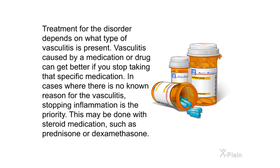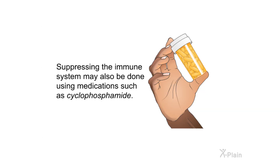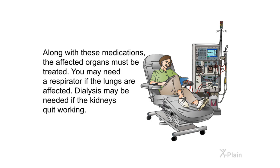Treatment for the disorder depends on what type of vasculitis is present. Vasculitis caused by a medication or drug can get better if you stop taking that specific medication. In cases where there is no known reason for the vasculitis, stopping inflammation is the priority. This may be done with steroid medications such as prednisone or dexamethasone. Suppressing the immune system may also be done using medications such as cyclophosphamide. Along with these medications, the affected organs must be treated — you may need a respirator if the lungs are affected, or dialysis if the kidneys quit working.